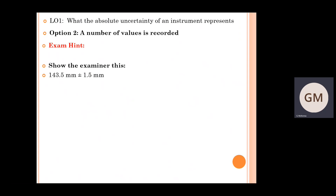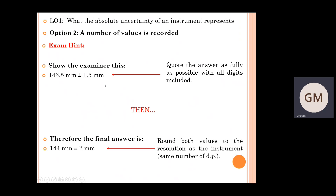In relation to what I would recommend doing in the examination: show the full digits for your average — in this case 143.5 millimetres — then write plus or minus the full digits for your absolute uncertainty. For your final answer, take the actual value and express it rounded to the resolution of your instrument. Then round your absolute uncertainty to the same resolution, which means to the same number of decimal places.